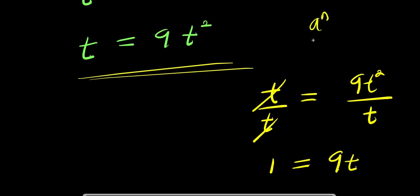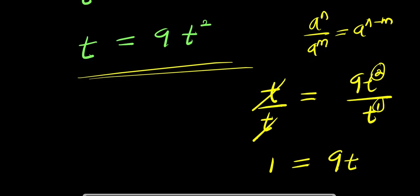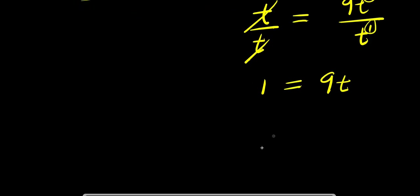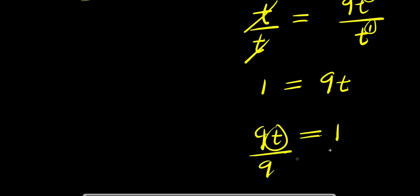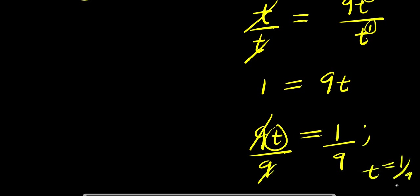Since t divided by t equals 1, and 9t² divided by t equals 9t (because t² divided by t is t to the power 2 minus 1, which is t¹), I have 1 equals 9t. Rearranging, 9t equals 1, so dividing by 9 gives t equals 1 over 9.